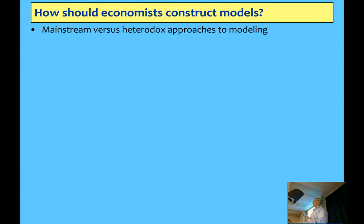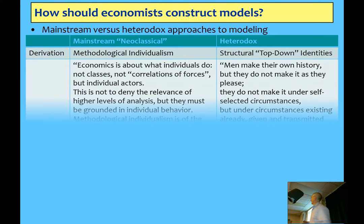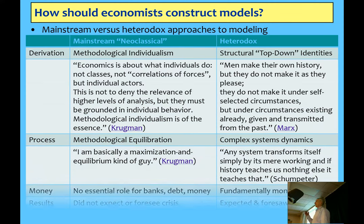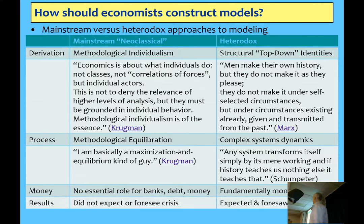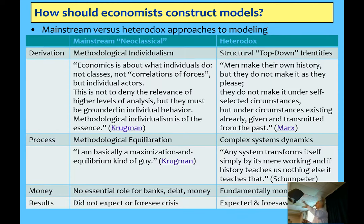Methodological individualism means they believe you have to start from describing an individual and then aggregate from that to the macro level to describe the macroeconomy. That's how they think you should do modelling. My approach and that of many critics is more aligned with what's said by the person on the right-hand side — ironically, Karl Marx. He wrote: 'Men make their own history, but they do not make it as they please. They don't make it under self-selected circumstances, but under circumstances existing already, transmitted from the past.' In other words, history and the structure of society constrain what individuals can do, even if individuals are the actors in an economy.